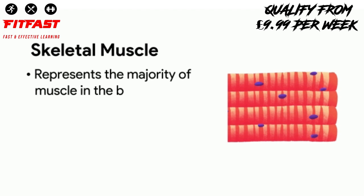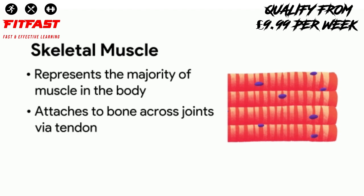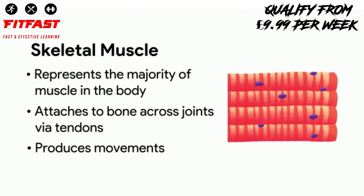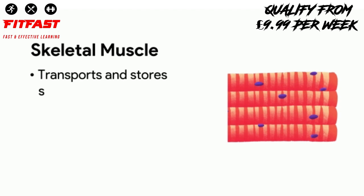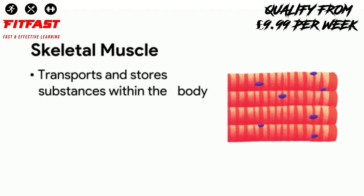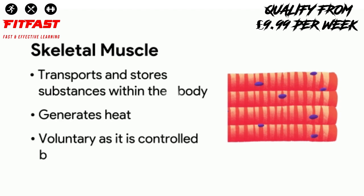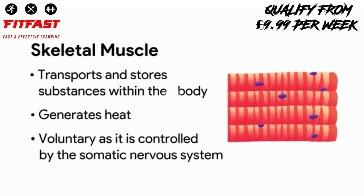Skeletal muscle represents the majority of muscle in the body. It attaches to bone across joints by tendons, produces movements within the body, determines posture by stabilizing body position, transports and stores substances within the body, and generates heat. Voluntary, as it is controlled by the somatic nervous system.